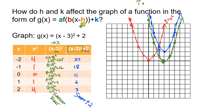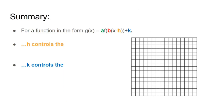Here's our summary. H controls the horizontal shift. If you had x minus 2 squared, that would mean you're shifting to the right 2 units. But if you had x plus 4 squared, that would mean you're shifting to the left 4 units.